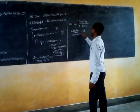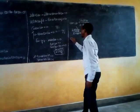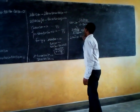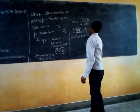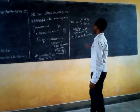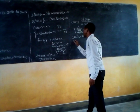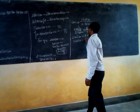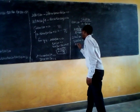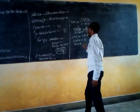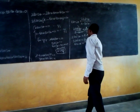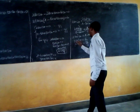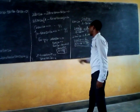So here, cross-multiplying: 2 tan²(θ) equals 1 minus tan²(θ). Collecting terms, 3 tan²(θ) equals 1, so tan²(θ) equals 1 over 3, meaning tan(θ) equals 1 over root 3.